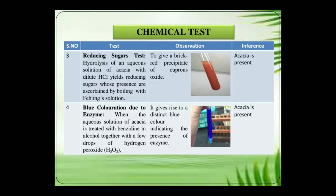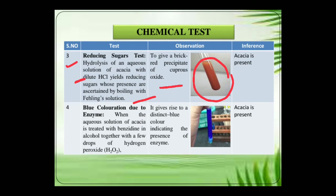The third test is the reducing sugars test, which gives a positive result because gum acacia contains several sugars such as Arabinose and galactose. In this test, hydrolysis of an aqueous solution of acacia with dilute hydrochloric acid yields reducing sugars, whose presence is confirmed by boiling with Fehling solution to give a brick-red precipitate of cuprous oxide. This result indicates that acacia is present.